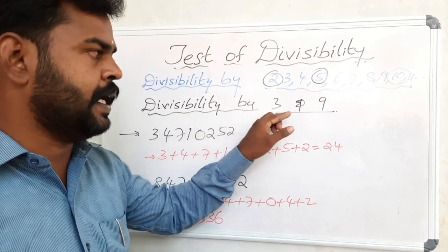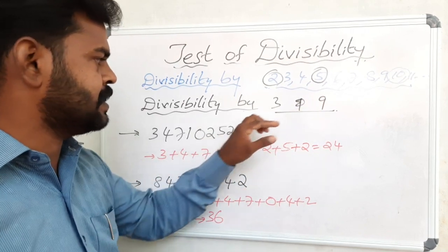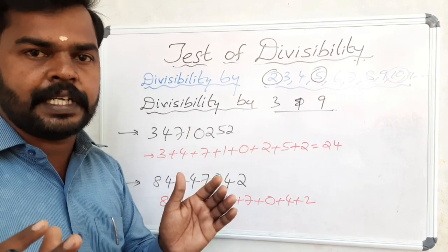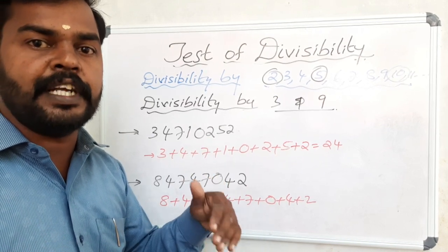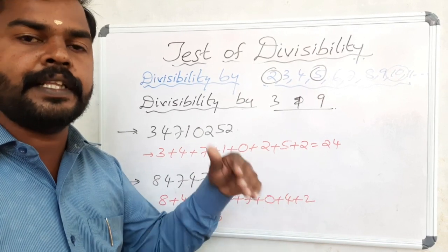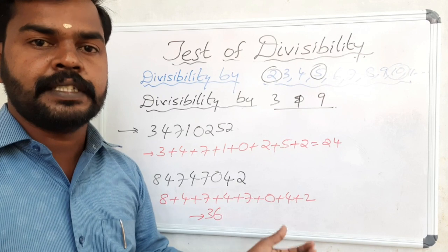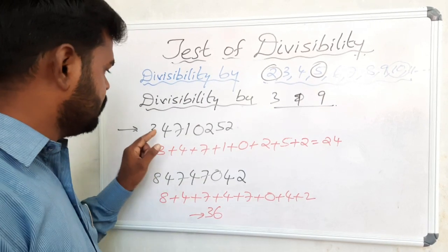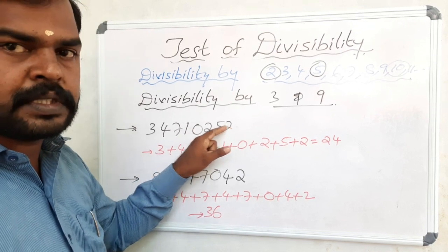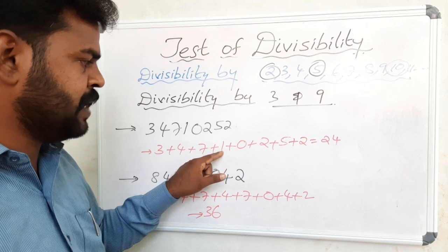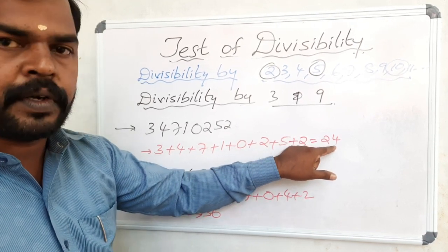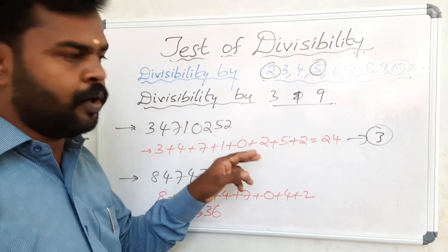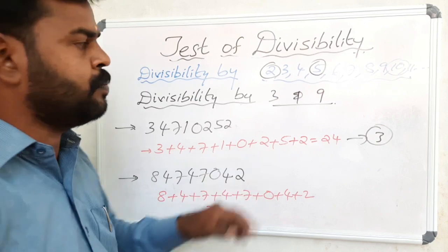Now let me explain divisibility by 3 and 9 — they follow the same rule. For 3: add all the digits; if the sum is a multiple of 3, then the number is divisible by 3. For 9: if the sum of all digits is a multiple of 9, the number is divisible by 9. Example: 3, 4, 7, 1, 0, 2, 5, 2 — sum is 3+4+7+1+0+2+5+2 = 24. Twenty-four is a multiple of 3, so this number is divisible by 3. But 24 is not a multiple of 9, so it is not divisible by 9.